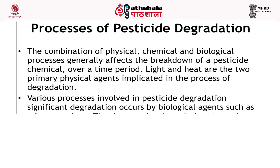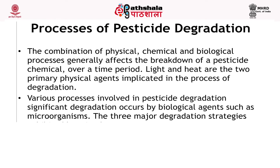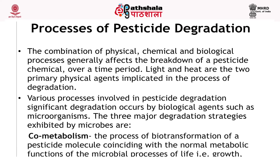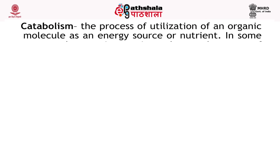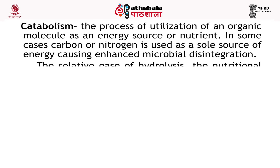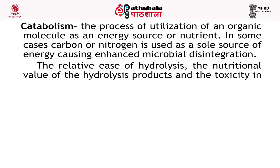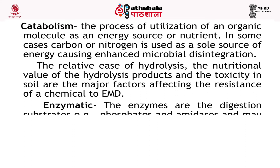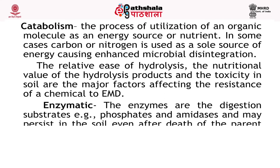Various processes involved in pesticide degradation: significant degradation occurs by biological agents such as microorganisms, depending on their prevalence in the environment and on the concentration of pesticide in the media. The three major degradation strategies exhibited by microbes are: co-metabolism, the process of biotransformation of pesticide molecules coinciding with the normal metabolic functions of the microbial process of life, that is growth, reproduction and dispersion; and catabolism, the process of utilization of an organic molecule as an energy source or nutrient. In some cases carbon or nitrogen is used as a sole source of energy, causing enhanced microbial disintegration. The relative ease of hydrolysis, the nutritional value of the hydrolysis product and the toxicity in the soil are the major factors affecting the resistance of the chemicals. Enzymatic processes: the enzymes are the digestion substrate, examples phosphatase and amidases, and may persist in the soil even after the death of the parent microbial cells.